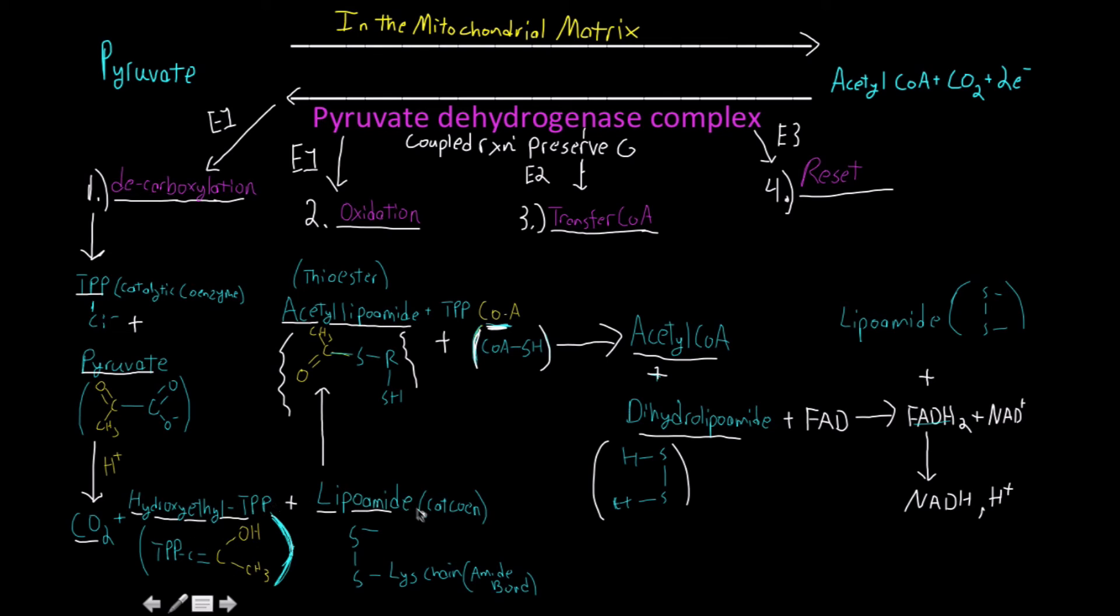Hydroxyethyl TPP is going to react with another catalytic coenzyme known as lipoamide, which has, the only thing that we need to know about it is that it has a disulfide bridge attached to it, and it's this long lysine chain that's connected to an amide bond of the enzyme complex. Anyways, so TPP, hydroxyethyl TPP, reacting with lipoamide, is going to actually result in the production of acetyl lipoamide and then regular old-fashioned TPP that we had at the beginning. Now, acetyl lipoamide has a thioester bond. Thioester bonds are very rich in energy, and this energy is going to be used to transfer the acetyl group to the CoA, thus giving us acetyl CoA and then dihydrolipoamide.